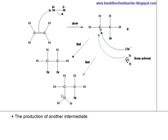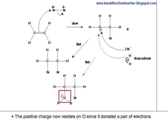The product is another intermediate. The positive charge now resides on oxygen since it donated a pair of electrons.